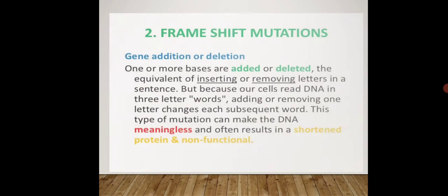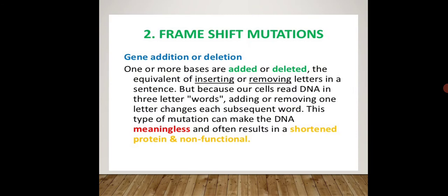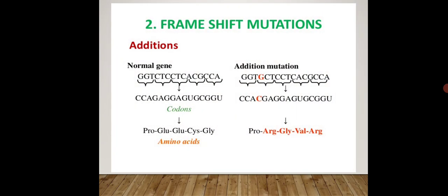Frame shift mutation may add a nucleotide or delete a nucleotide — the 'frame' here refers not to a photo frame but to the codon, the triplet codon. The frame may change by addition or deletion, which may change the codons and ultimately the gene sequence and amino acids as well. It may also introduce a stop codon which would halt further protein synthesis. Frame shift mutation can cause nonsense or missense type mutations.